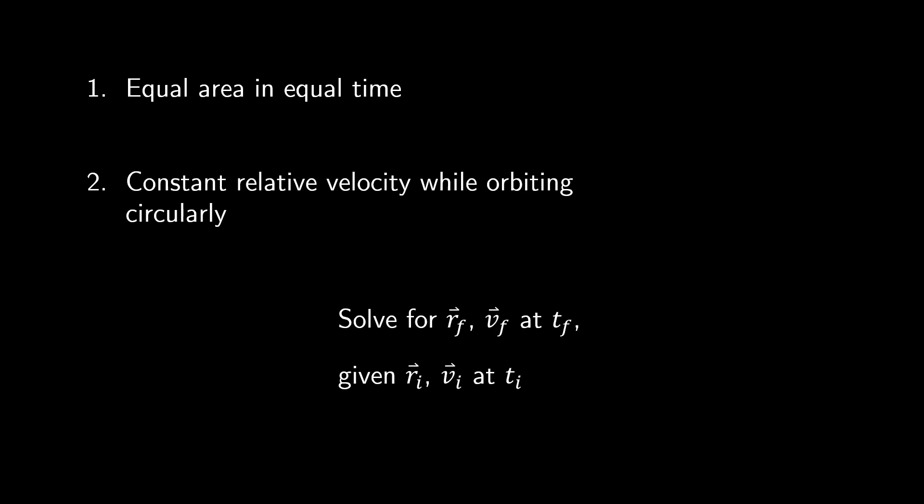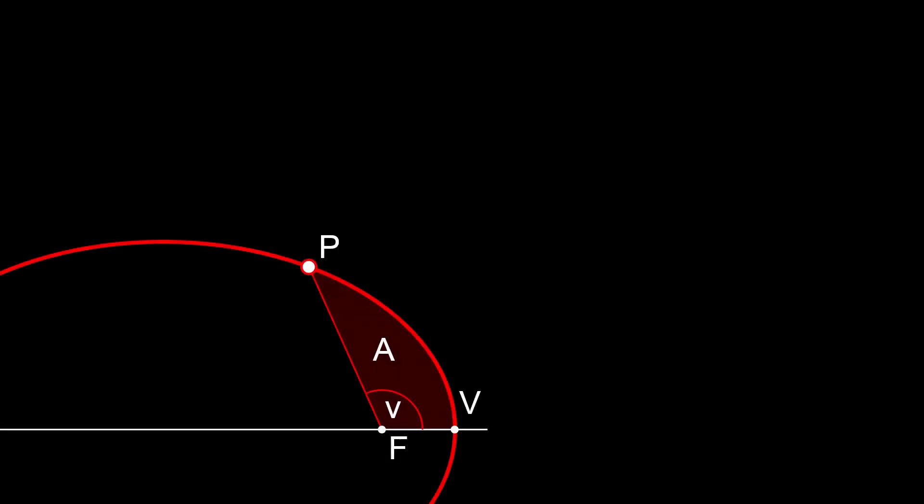Given those two ideas, equal area and equal time, and the constant angular velocity of circular orbits, Kepler was able to produce a relationship between aforementioned t-initial and t-final, and parameters of a trajectory. Consider for a second just our body at some position p, with true anomaly ν, and the area swept out, labeled a, between some t-initial at the periapsis and t-final at p. We've also labeled capital V as the periapsis point at time t-initial, and the focus, f, where our gravitational source sits.